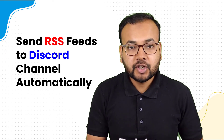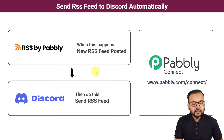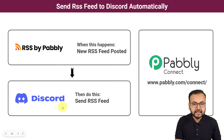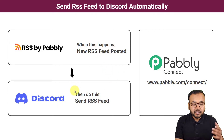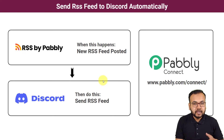This automation is going to help you a lot. The flow is: when a new post is posted on the website, the same RSS feed is going to be delivered on your Discord channel automatically. You will not need to manually copy the link and type a message on Discord. This will happen automatically and will save a huge amount of time and energy, and it will improve your user engagement as well.